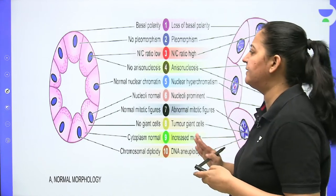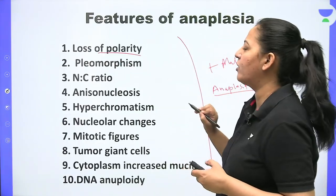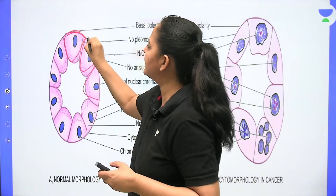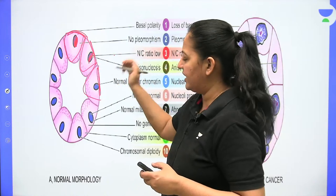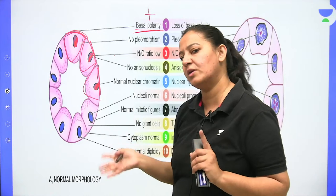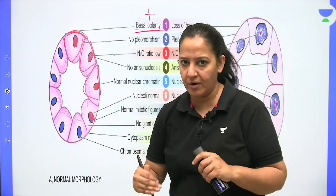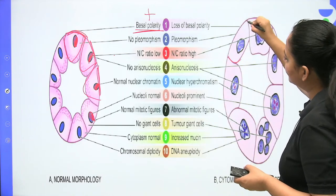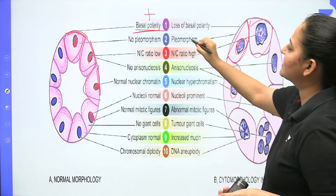In summary on anaplasia features: variation in shape and size of the cell is pleomorphism; variation in shape and size of the nucleus is anisonucleosis (anisocytosis). Both properties are present in malignancy. On the microscopic slide you can also identify giant cells with multiple nuclei and cells showing spindle formation indicating mitosis. Looking at such a slide at first glance, a pathologist can identify it as malignant — all 10 features of anaplasia are present.